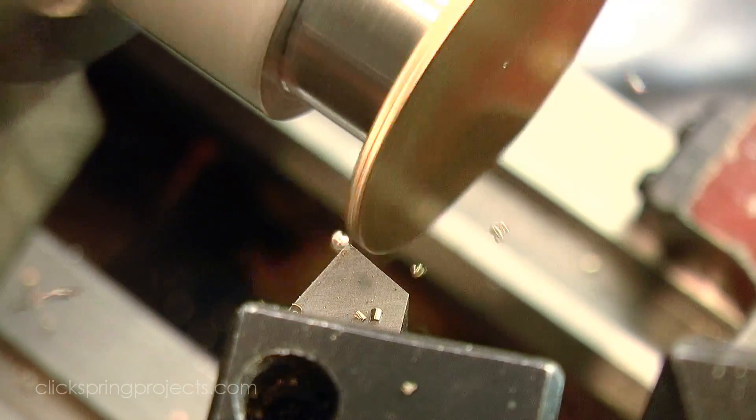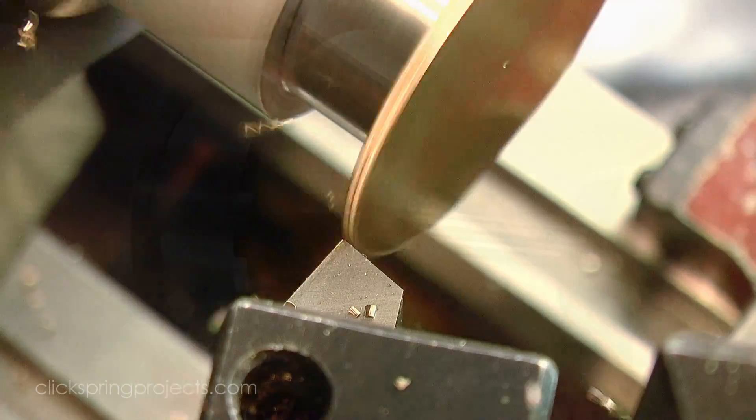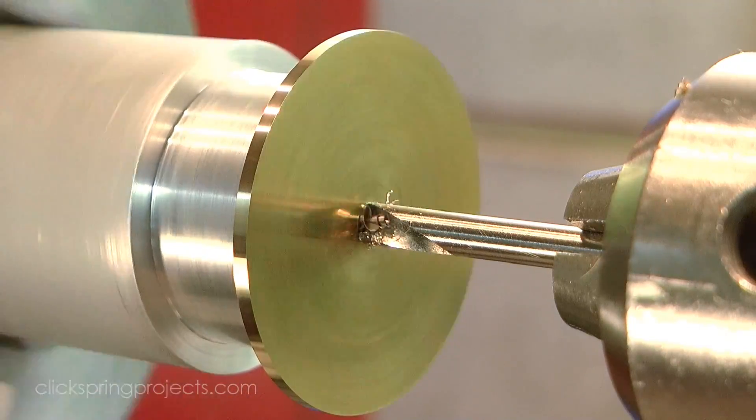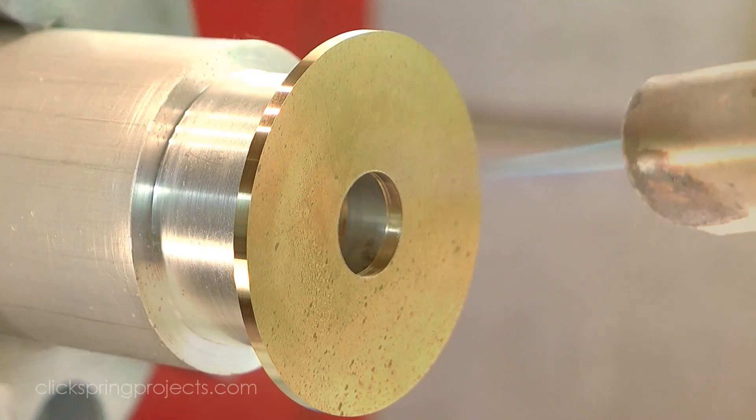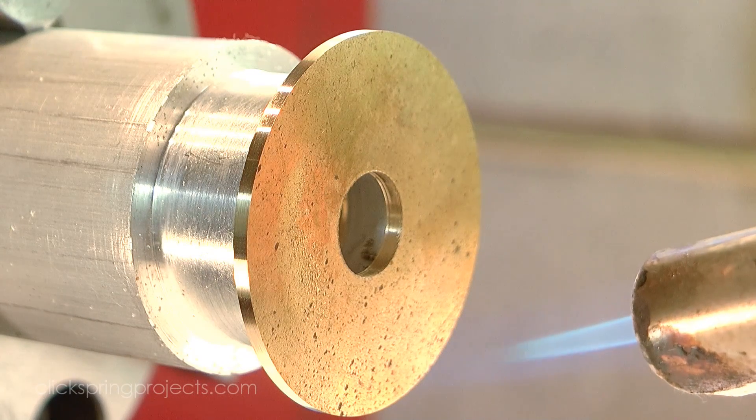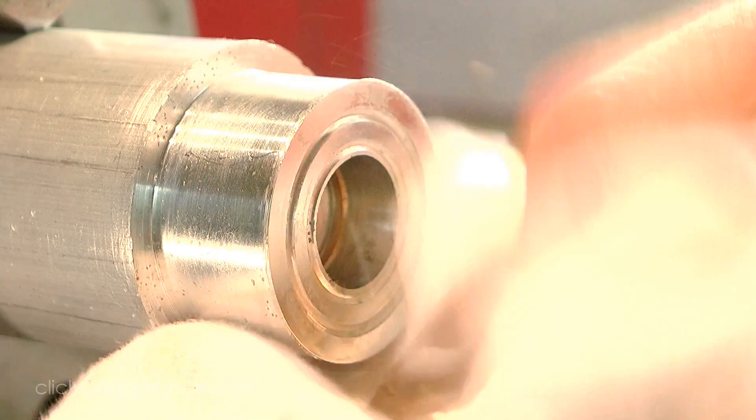particularly if you were working on something really critical like say filing some teeth, or locating a hole. So I think it's reasonable to assume that the ancients would have tried to improve this situation, with some sort of equivalent to our modern marking dies.